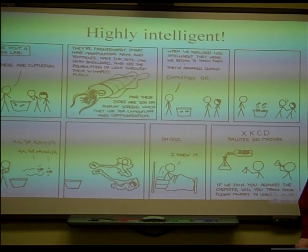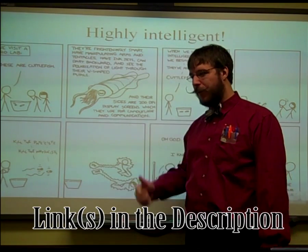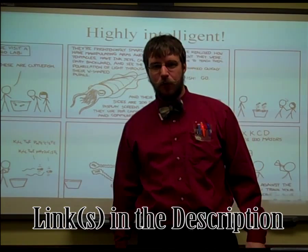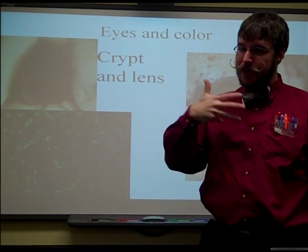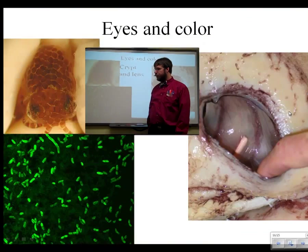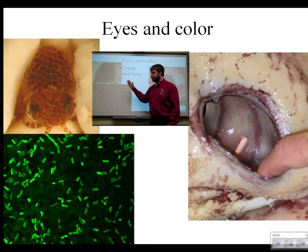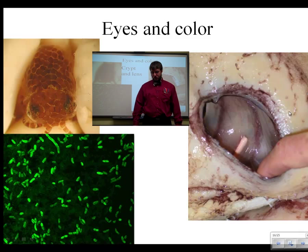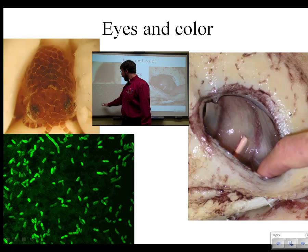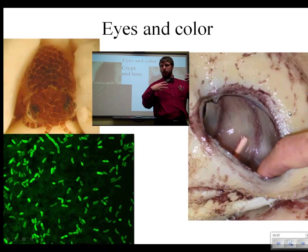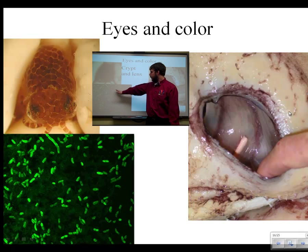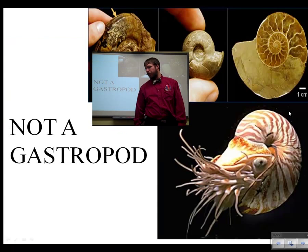Many cephalopods, including some octopi and even nautiluses, can actually see better than we can. They also tend to be highly intelligent. Their eyes allow them to detect color changes in the water, and many have chromatophore cells — lenses for detecting color — and they can actually change the color of their body. Cuttlefish and octopi do this, but not many squid. Inside the chromatophores, they have a symbiotic relationship with bacteria that do the color changing for them via hormones, responsible for bioluminescence and color changing — which is crazy.